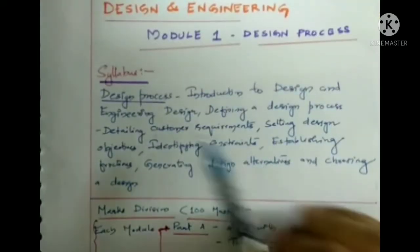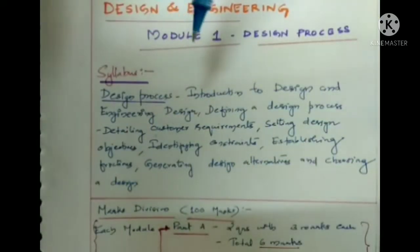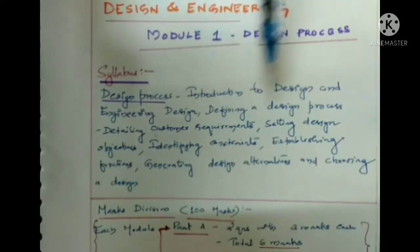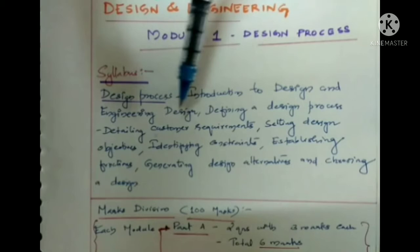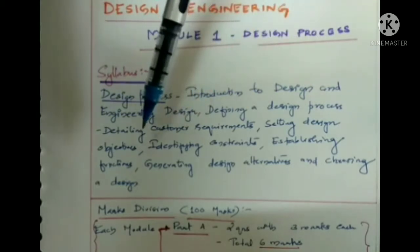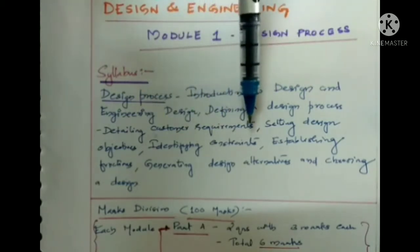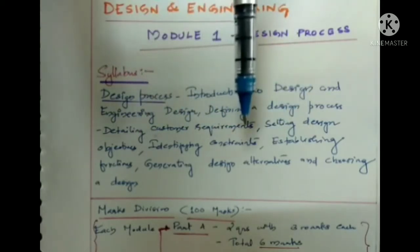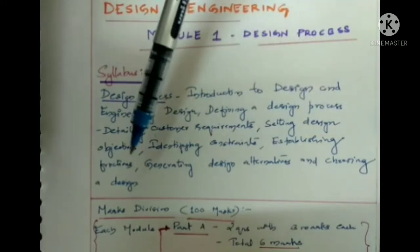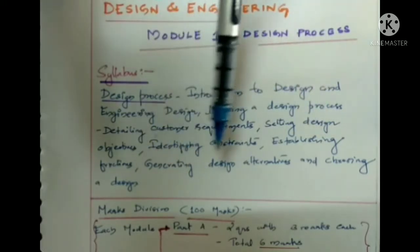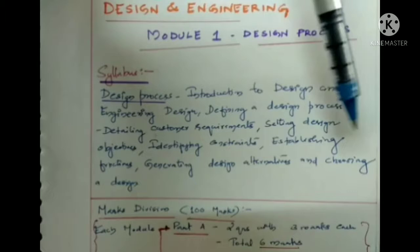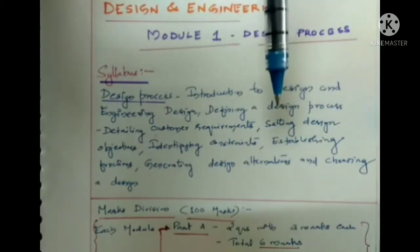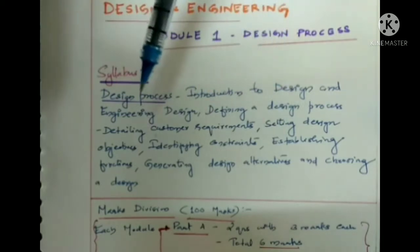The first module is Design Process. The syllabus covers: introduction to design and engineering design, designing a design process, detailing customer requirements, searching design objectives, identifying constraints, establishing function, generating design alternatives, and choosing a design. These are the topics under the first module.